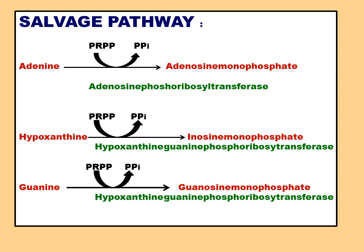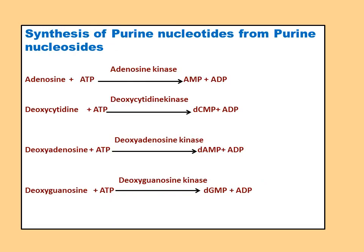Additional salvage pathway reactions: purine nucleosides may also be converted to purine nucleotides. Adenosine in the presence of adenosine kinase and ATP is converted to AMP and ADP. Deoxycytidine by deoxycytidine kinase and ATP forms deoxycytidine monophosphate and ADP. Deoxyadenosine by deoxyadenosine kinase and ATP forms deoxyadenosine monophosphate and ADP. Deoxyguanosine by deoxyguanosine kinase and ATP forms deoxyguanosine monophosphate and ADP. All kinases require ATP.